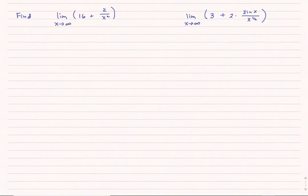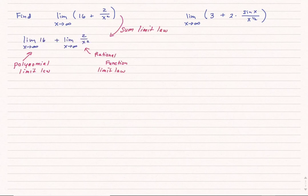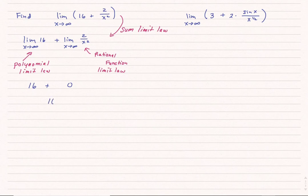Let's look at two examples using the limit laws we've established. For the first one, using the sum limit law and the polynomial limit law, 16 is always 16 no matter what. Using the rational function limit law on the second term, I can't let x equal infinity squared, but I do know that the limit of that rational function as x gets larger and larger goes to zero. So the limit of the first example is simply 16.